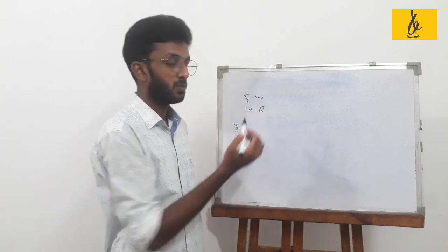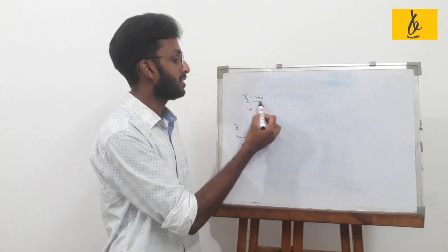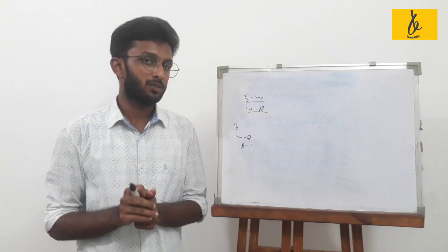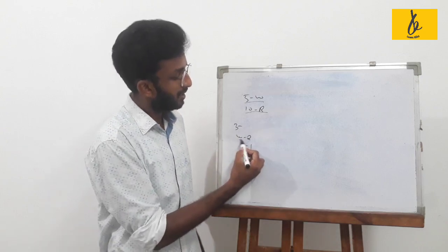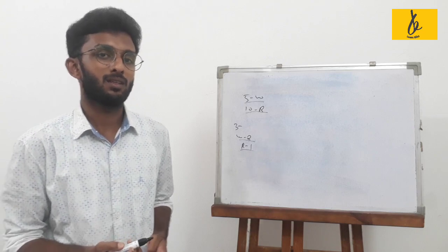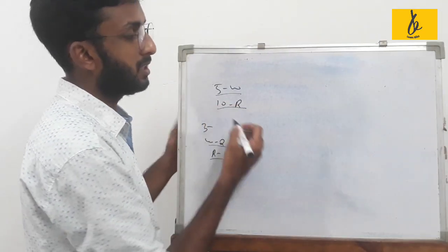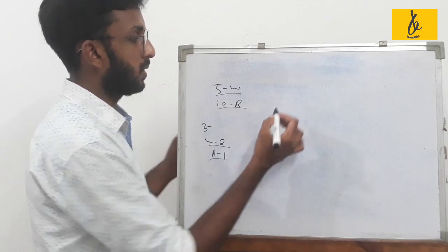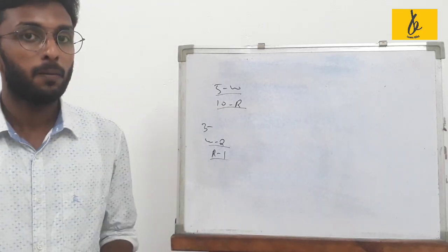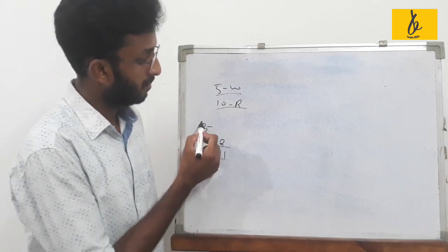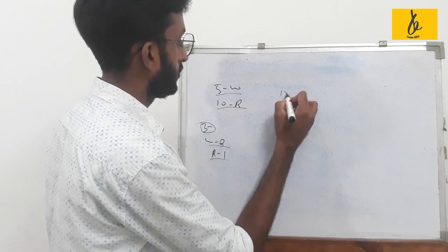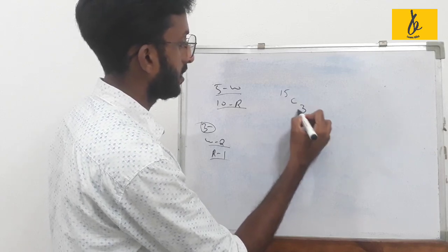We have 5 white and 10 red balls. We need to find 2 white and 1 red. We calculate the total — 15 balls. We select 3 from 15, which gives us 15C3.